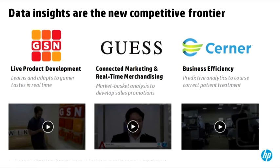Gap, within retail — both brick-and-mortar and e-commerce — offers personalized one-on-one offers online by understanding customer behavior for upsells. On the brick-and-mortar side, they generate daily store reports delivered via iPad to franchisees so that when they open their stores, they know exactly their inventory, top sellers, and how to reconfigure and promote certain offerings to drive more revenue. Cerner in healthcare is doing predictive analytics to course-correct patient treatment, analyzing patient history, family history, and behavior to deliver better patient care.